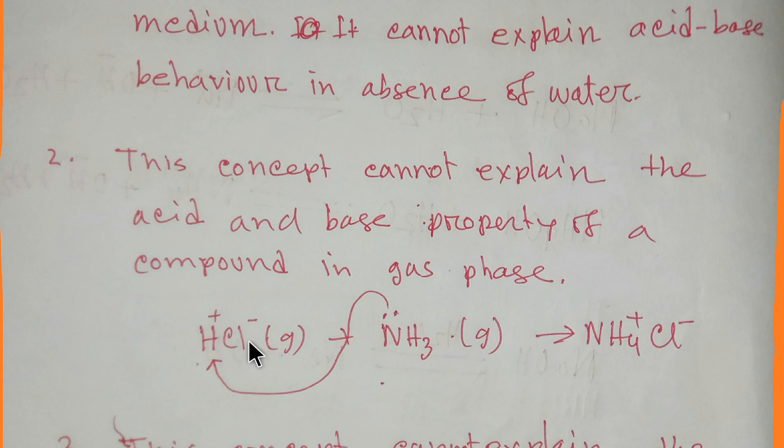Here HCl is acid and ammonia is the base, though ammonia doesn't have any hydroxyl ion which is the condition for Arrhenius concept to be base.